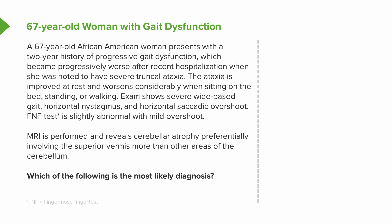An MRI is performed and reveals cerebellar atrophy, preferentially affecting the superior vermis more than other areas of the cerebellum. Which of the following is the most likely diagnosis?